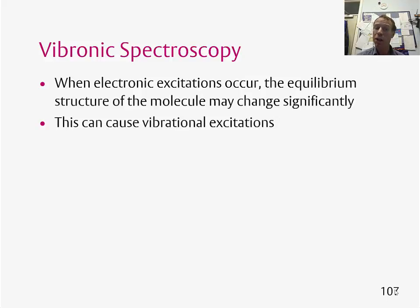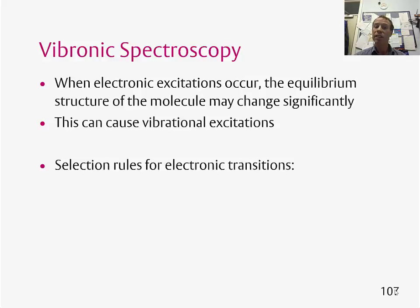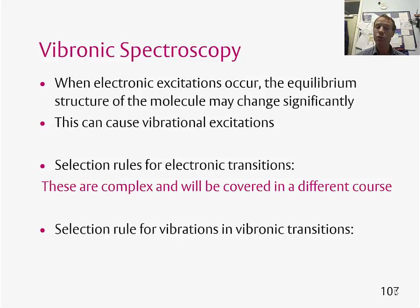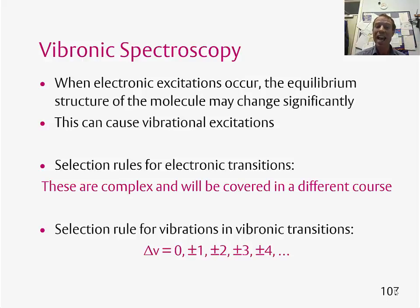This can cause vibrational excitations at the same time. Detailed selection rules for electronic transitions are quite complicated, so we're not going to worry about those for this course. What we are interested in, however, are the selection rules for the vibrations within a vibronic transition. The selection rule for this is very simple: any value of ΔV is allowed — so 0, ±1, ±2, ±3, ±4, and so on.